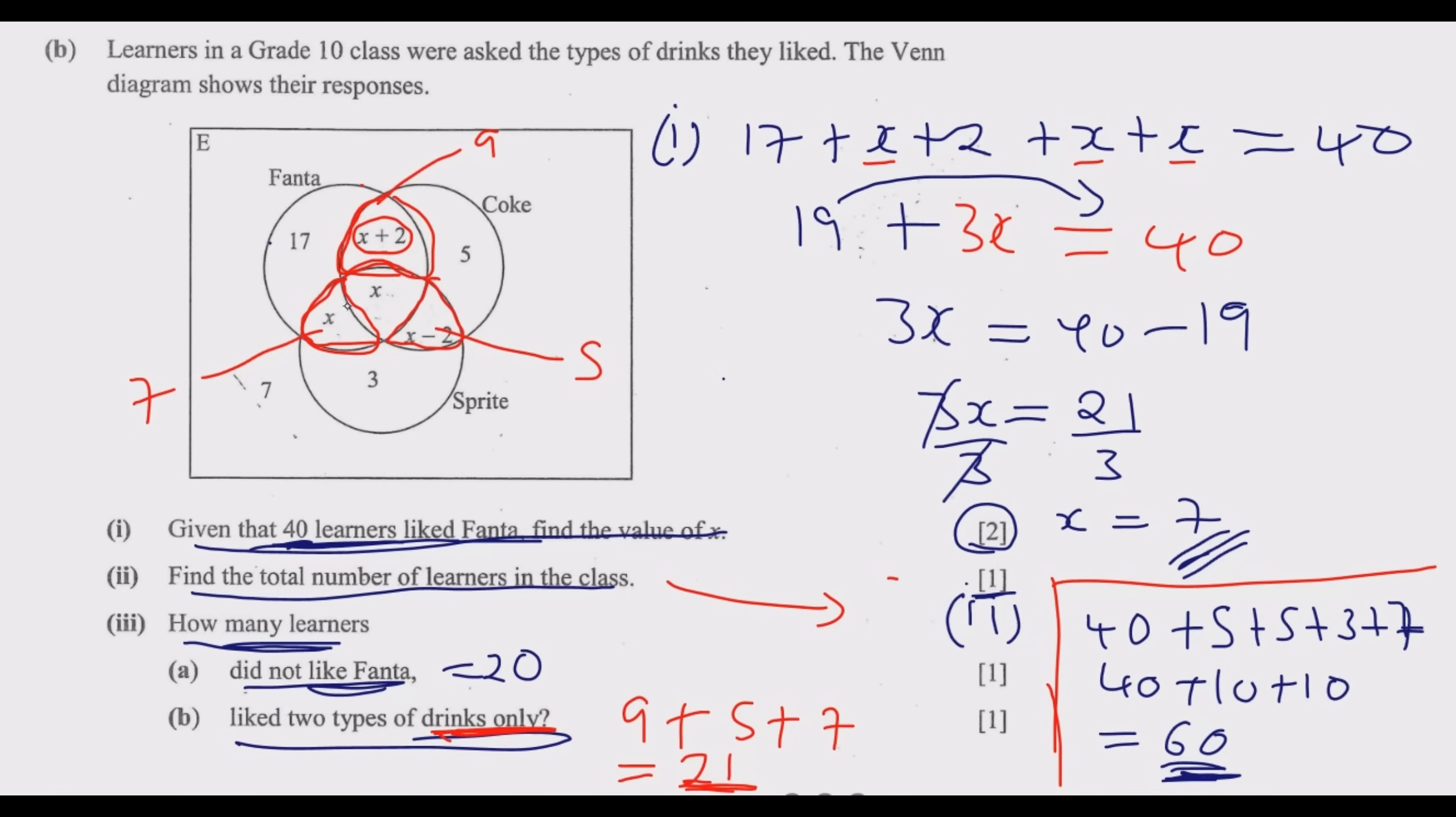So 21 liked two types of drinks only. The key is 'only.' What is in the middle here likes all three drinks, but here likes two types of drinks. This is how you answer this question to get these good marks.